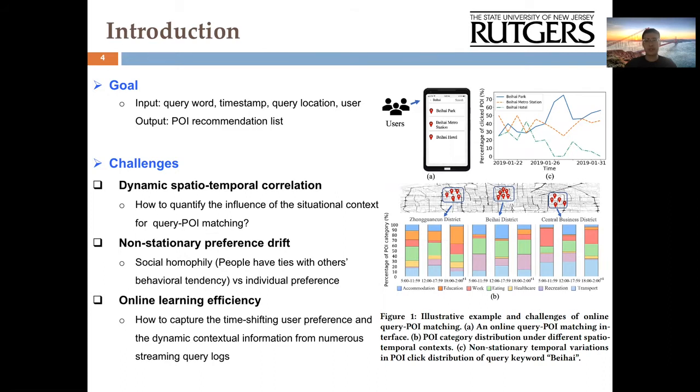However, there exist three primary challenges before we can achieve this goal. The first one is related to dynamic spatio-temporal correlation. As can be seen in Figure 1B, which summarizes the distribution of the user-children POIs in three representative places in Beijing, such category distribution differs significantly under different spatio-temporal contexts, which renders it quite challenging to integrate such dynamic information during online query-POI matching.